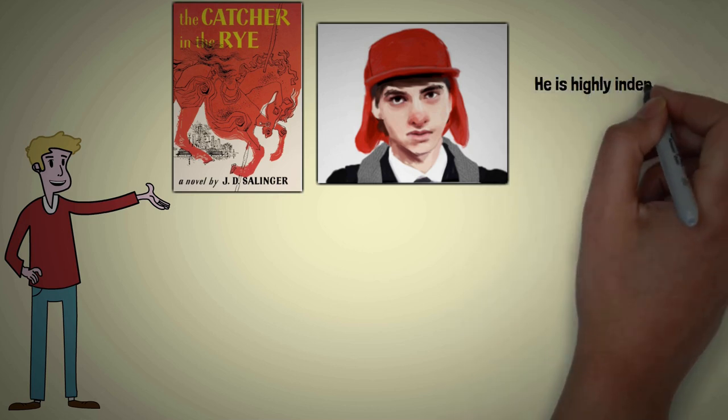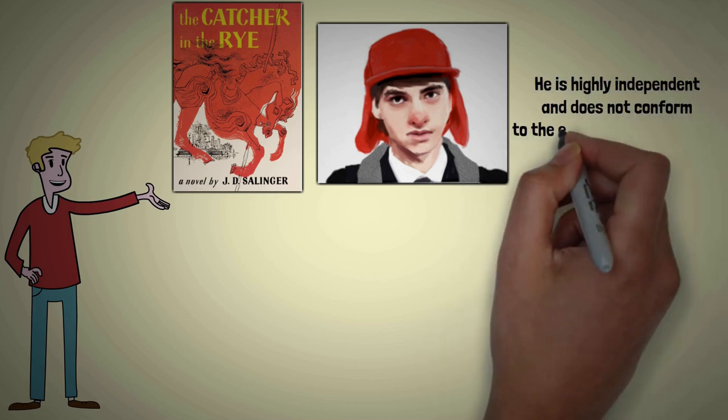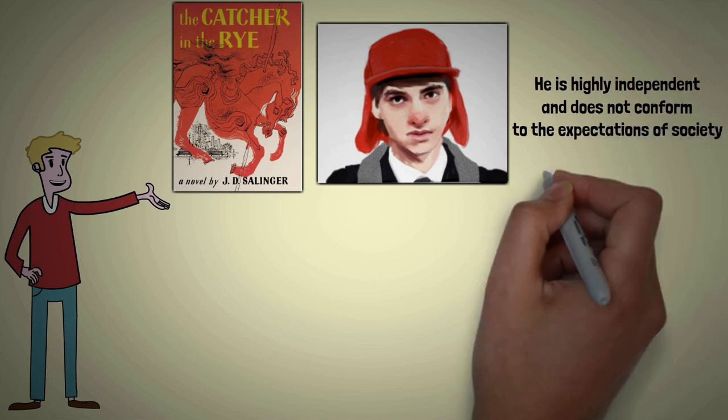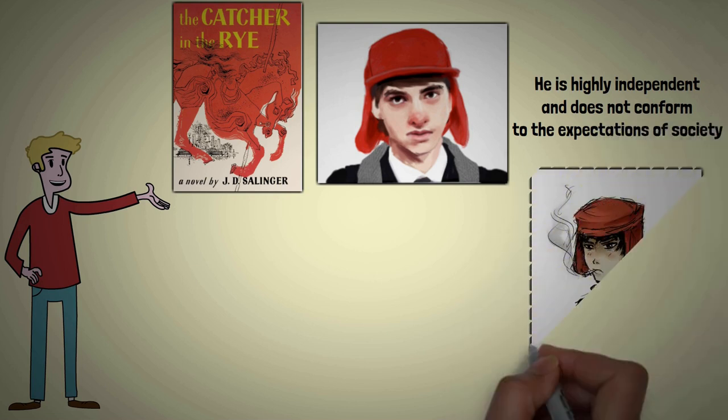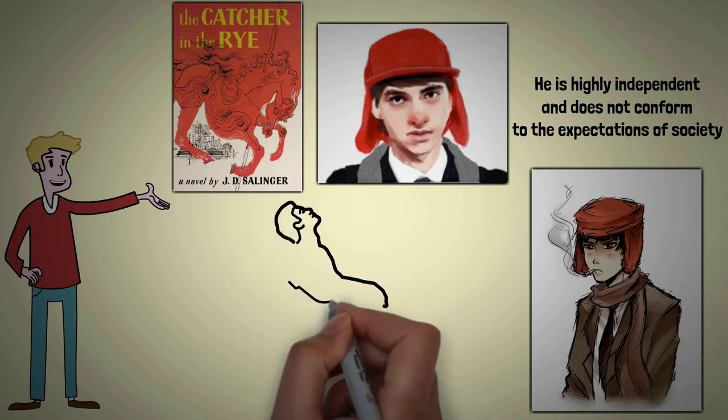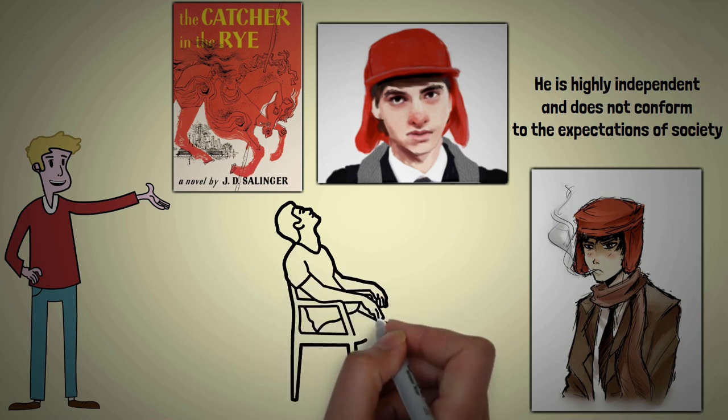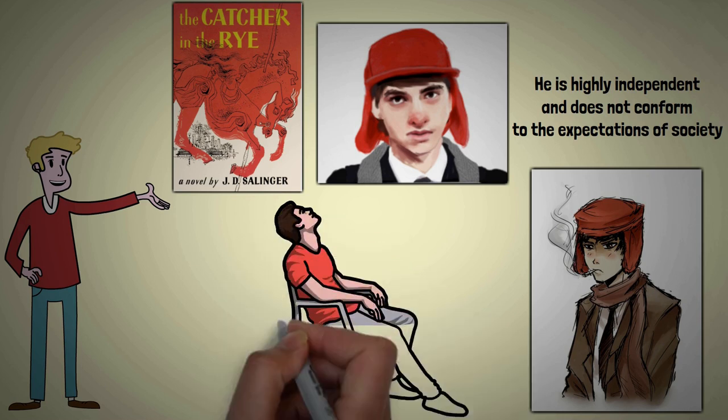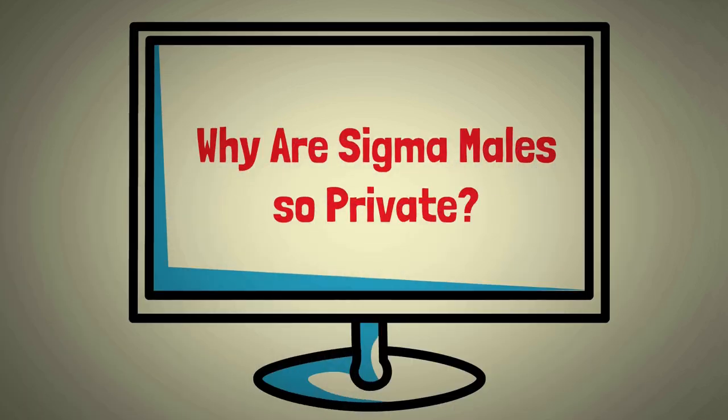He is highly independent and does not conform to the expectations of society. He keeps his thoughts and feelings to himself, often to the point of appearing aloof and distant. This highlights that Sigma males are often misunderstood due to their private and independent nature. In today's video, we shall discuss why Sigma males are so private.